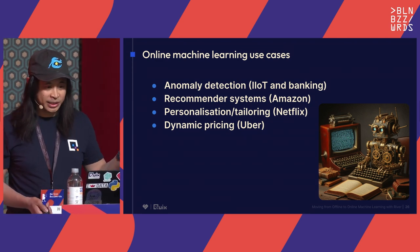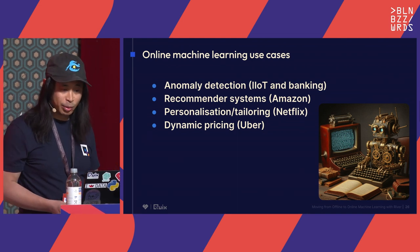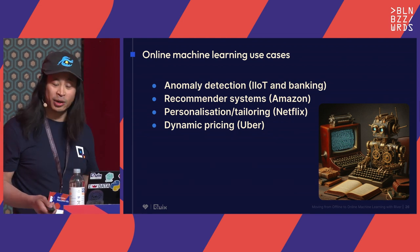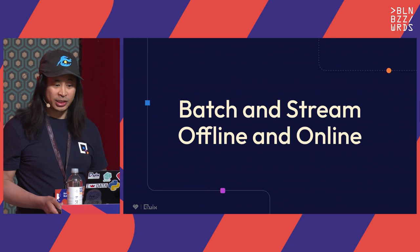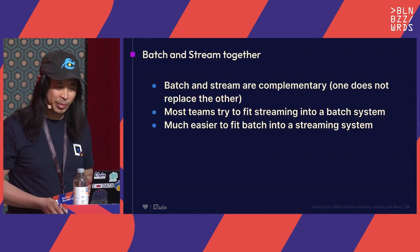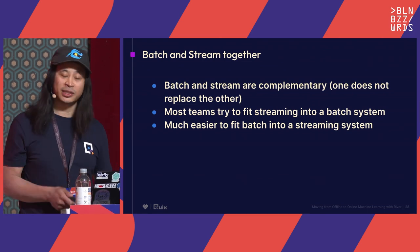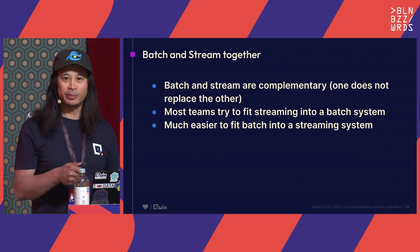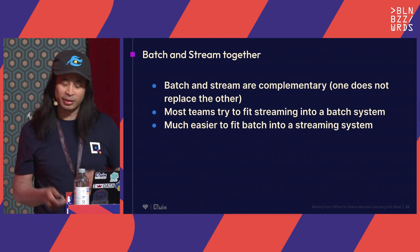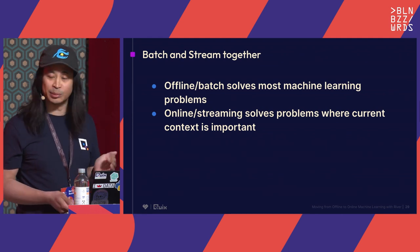Here are some use cases: anomaly detection, which is really common in industrial IoT and banking — half-space trees are a great approach there — as well as recommender systems, personalization, and dynamic pricing. Batch and stream are complementary; one does not replace the other. Most teams try to fit streaming into a batch system, but it's much easier to fit batch into a streaming system. In my mind, batch is actually a specialization — a specialized subset of streaming. The summary is that offline solves most machine learning problems, but online solves problems where current context is important.